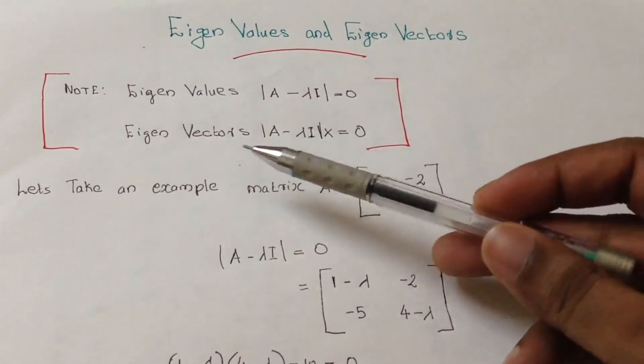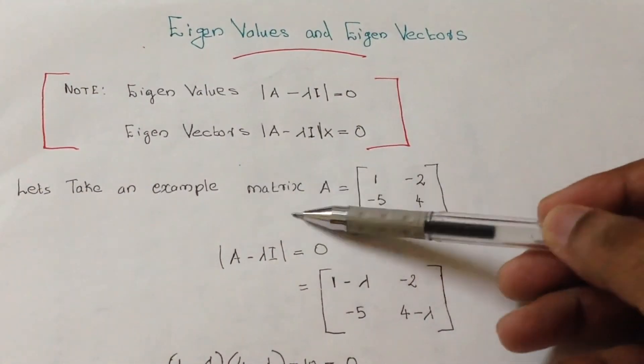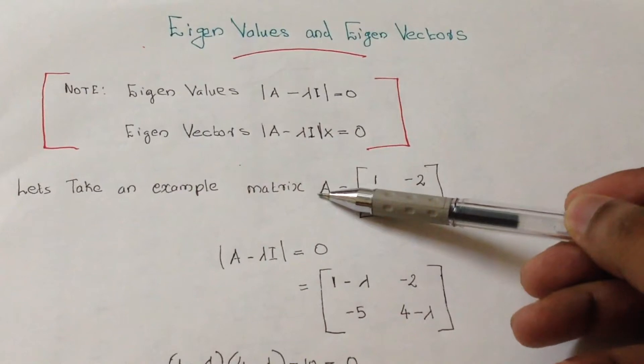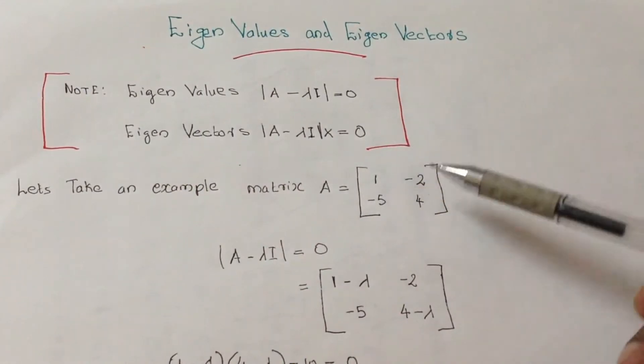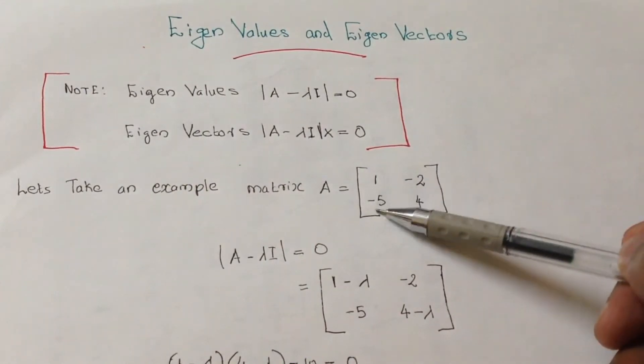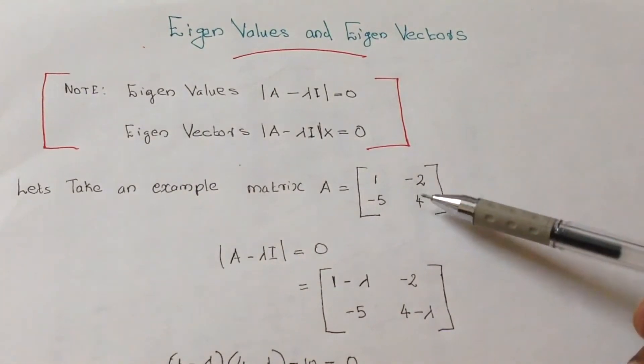Let's take an example. Matrix A is given as 1, minus 2, minus 5, 4.